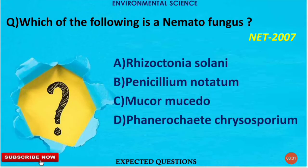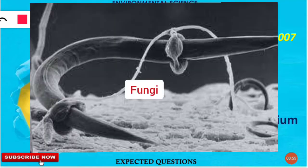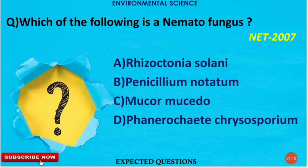The first question is: which of the following is a nemato fungus? The correct option is D — Phanerochaete chrysosporium. These are carnivorous fungi specialized in trapping and digesting nematodes, which are roundworms. That's why these nemato fungi are also used for removing toxic pollutants from wastewater.